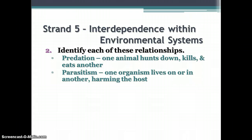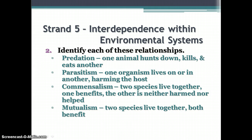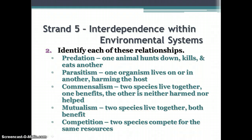Parasitism is when one organism lives on or in another, harming the host. The host is the one that's harmed; the parasite benefits from the relationship. In commensalism, two species live together and one benefits while the other is neither harmed nor helped. In mutualism, two species live together and both benefit from the relationship. In competition, two species compete for the same resources, and one will likely move on or die out, or the competition can lead to the decline of both species.